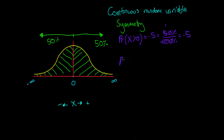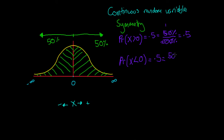Also, the probability that x is less than zero is equal to 0.5, and that's the exact same rationale. So if 50% of the numbers are on that side — so 50% of our data lies to the left or below zero — then the probability that we choose a number less than zero is going to be equal to 50%. And if we convert that back into a probability, so we do 50% divided by 100%, we just get 0.5.